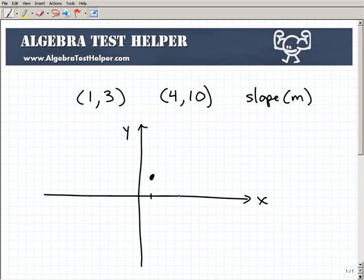And then (4,10) might be like up here. So I have these two points or ordered pairs or coordinates, and a line crosses through those two points. What I want to do is find the slope or the angle of that line.